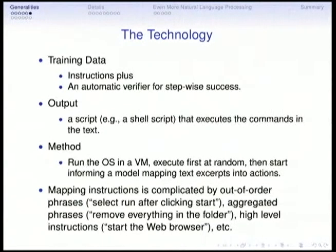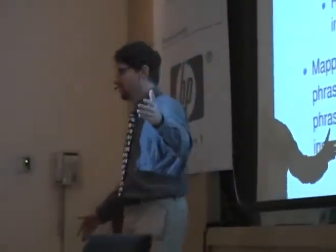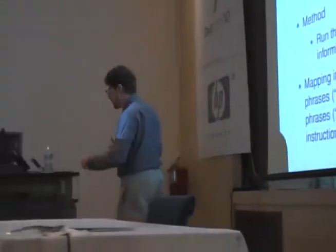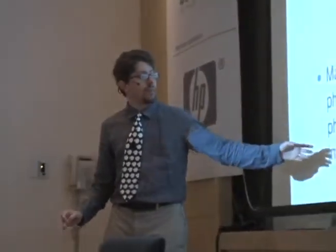The process is quite complicated because the instructions can be out of order — you can see 'select run after click and start'. They count at least seven different ways to say 'click on the start menu'. You have aggregated phrases that refer to multiple actions at once, and high-level instructions like 'start the web browser', which in some cases means clicking an icon on the desktop, while in other cases the instructions assume the user already knows what that means.